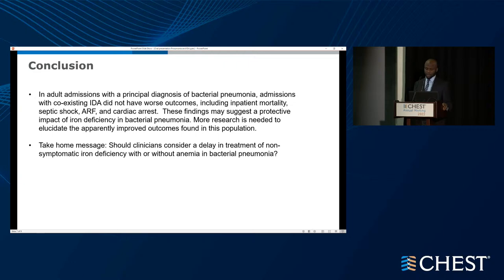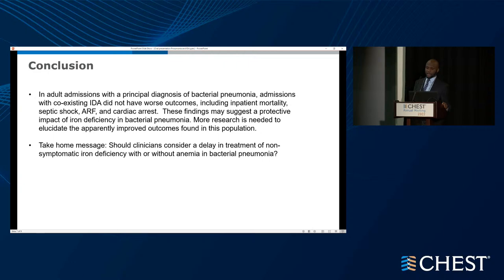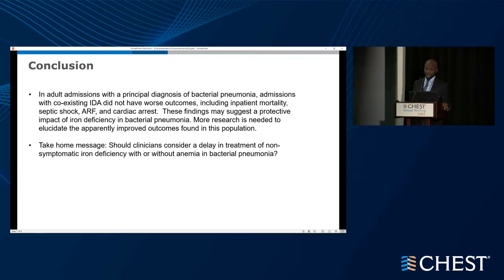This is a summary table of the outcomes. In conclusion, patients admitted for bacterial pneumonia with iron deficiency anemia did not have a worse outcome — in fact, they had better outcomes in terms of mortality, septic shock, acute respiratory failure, and cardiac arrest. This finding may suggest a protective impact of iron deficiency anemia in bacterial pneumonia. This is a correlation and doesn't mean causation. To the best of our knowledge, this is the first study showing this association between iron deficiency anemia and bacterial pneumonia.